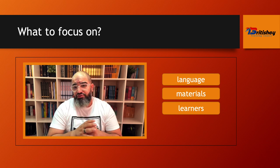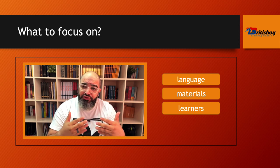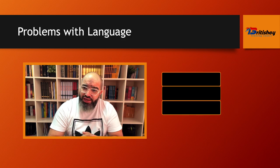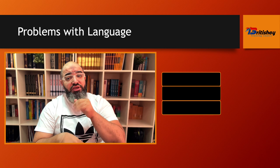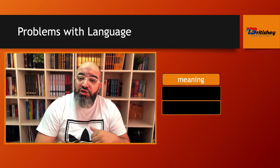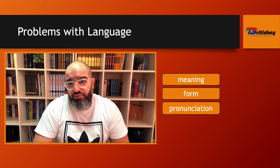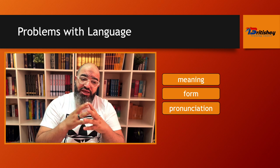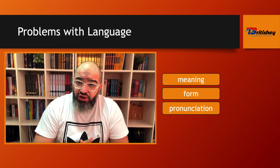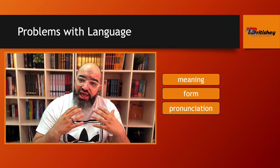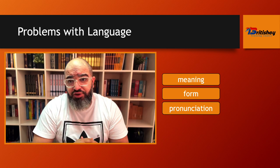And this is why language will be the focus of this episode. Problems with language — when we talk about problems with language, we're talking about three main areas: meaning, form, and pronunciation. These are the three main areas we would focus on when we're teaching language, and we're going to see how we're supposed to handle each area.